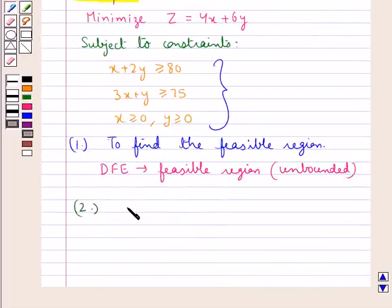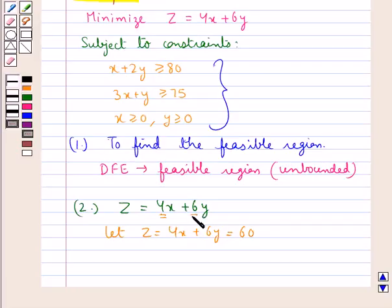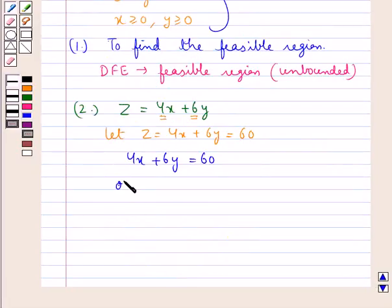Now in the next step you have the objective function z equal to 4x plus 6y. We will assign a convenient value to this objective function z. Let z equal, that is 4x plus 6y equal to say 60 which is the common multiple of 4 and 6. We take 4x plus 6y equal to 60 or you can say 2x plus 3y equal to 30 as equation 1.